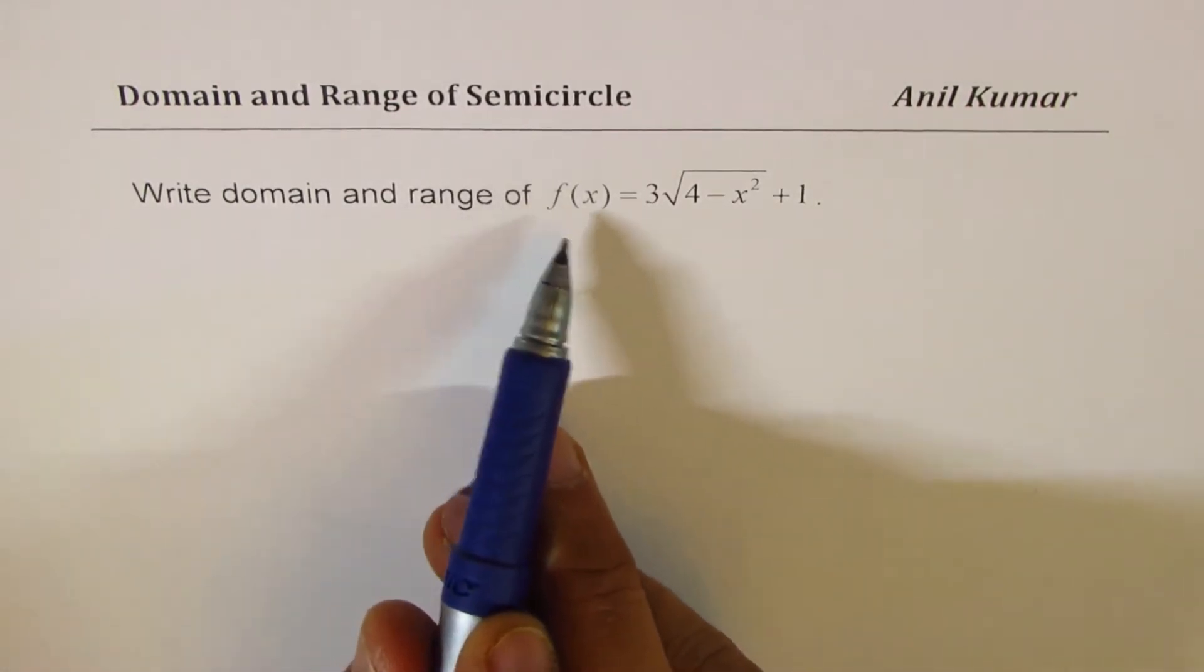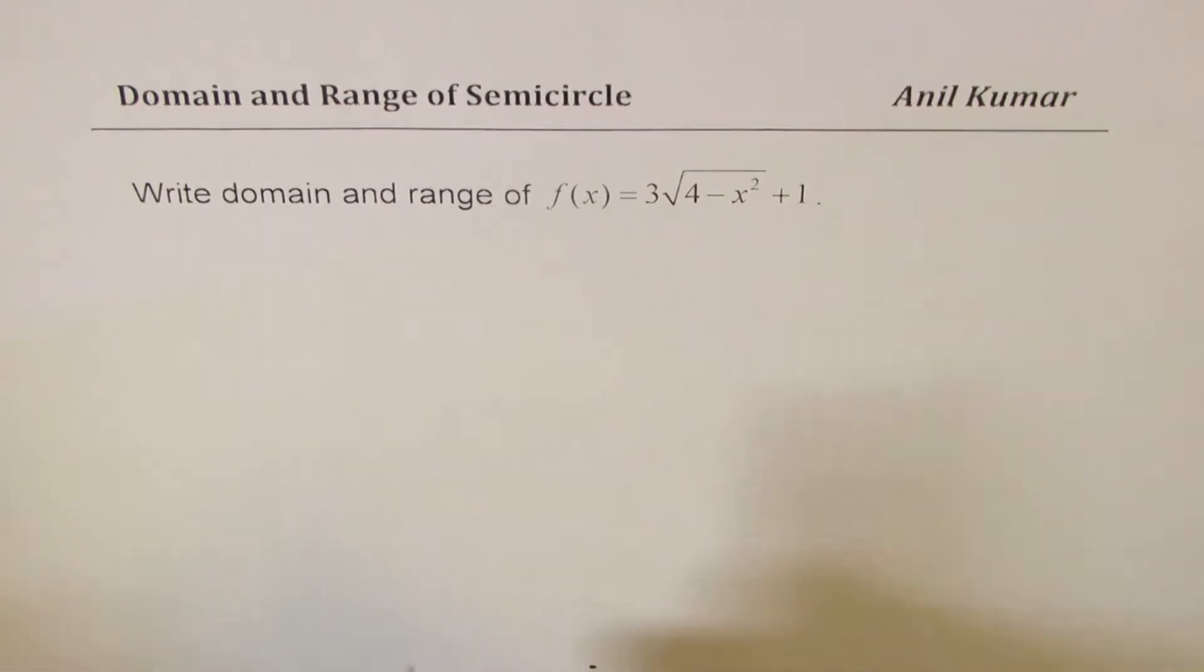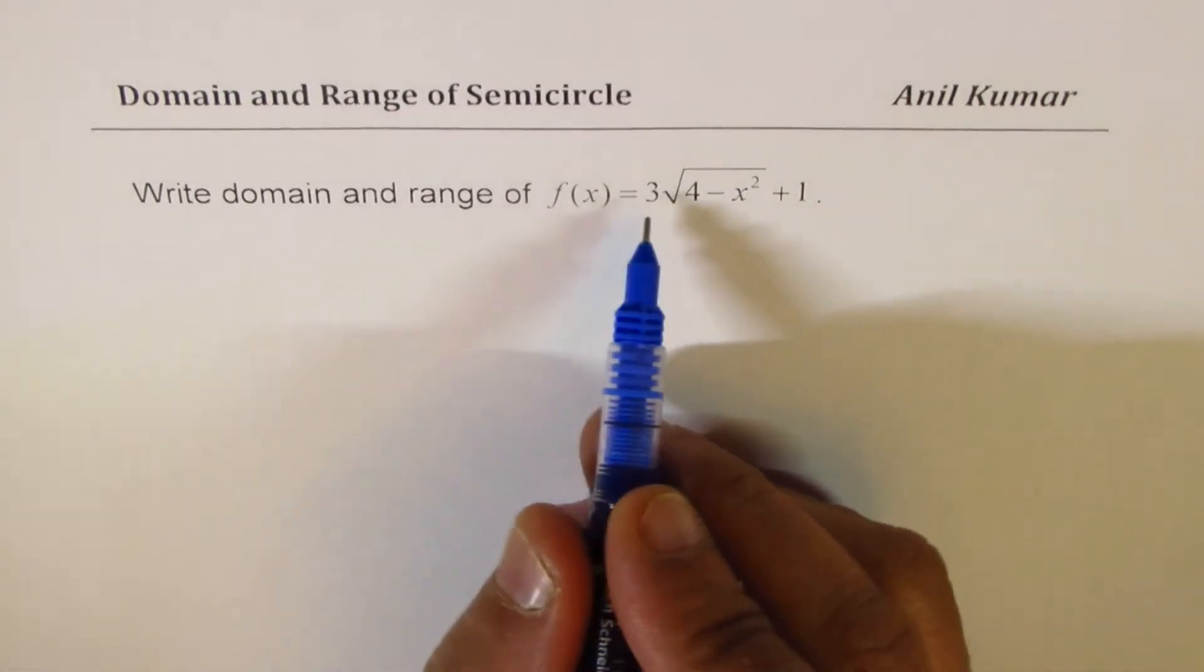We'll try to solve this example. Write domain and range of f(x) equals 3 times square root of 4 minus x squared plus 1. Now, what does this equation or the function represent?